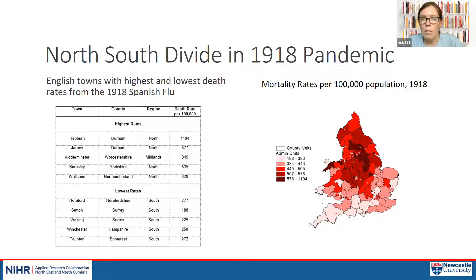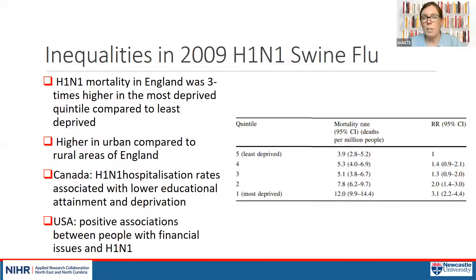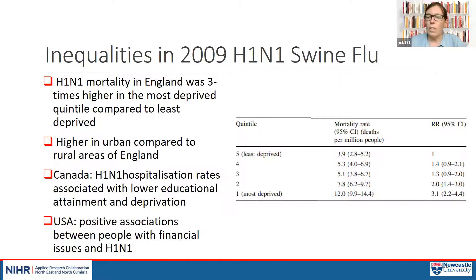These patterns were also replicated to a smaller extent in the 2009 H1N1 swine flu epidemic, where increased hospitalisation rates were associated with deprivation. Mortality from H1N1 was three times higher in the most deprived parts of England and Wales.